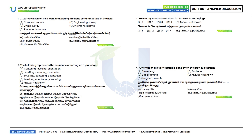First question: Which survey is one in which fieldwork and plotting are done simultaneously in the field? The fieldwork and plotting are done simultaneously in the field — that is plain table survey. Option C is the correct answer.